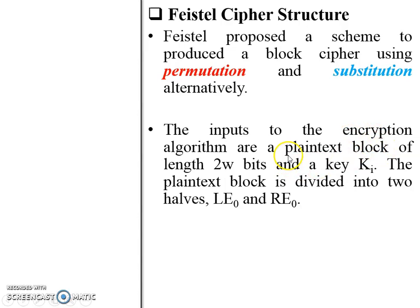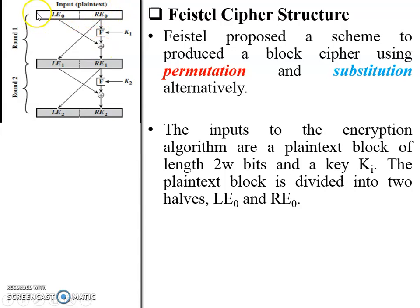The input to the encryption algorithm is a plaintext block, because we are discussing block cipher. The length of the plaintext block is 2W bits, and a key Ki is also applied. The plaintext block is divided into two halves: LE0 and RE0 — the left part and the right part for encryption round zero. In the figure, this whole plaintext block is divided into two equal parts: LE0 and RE0.